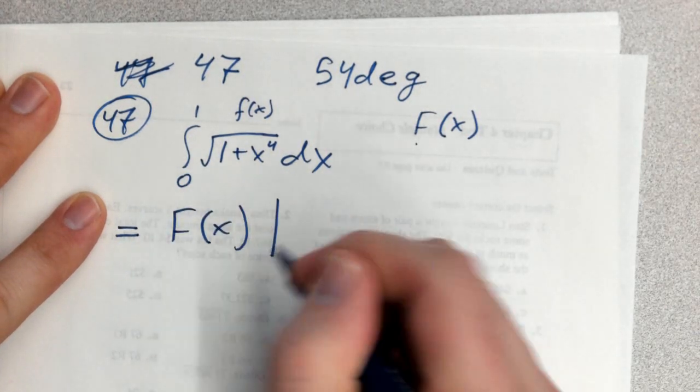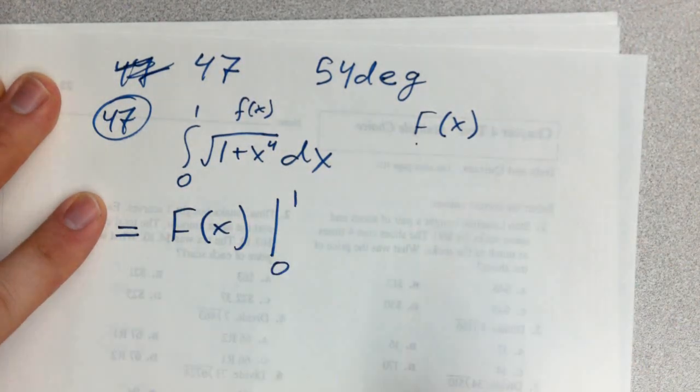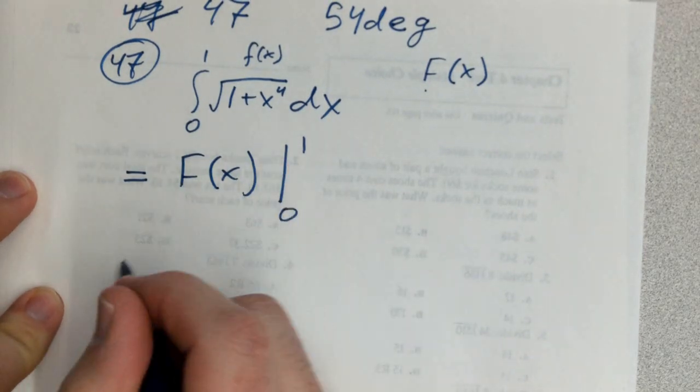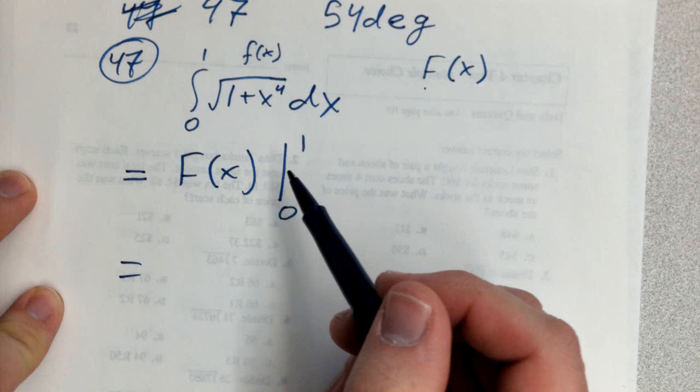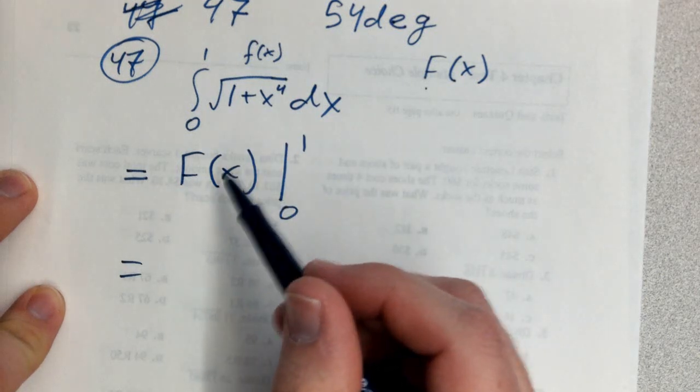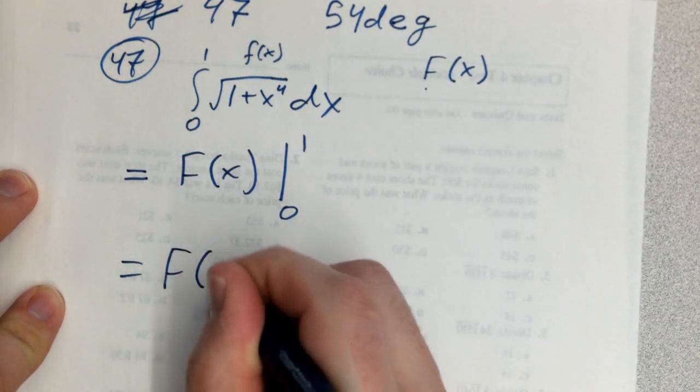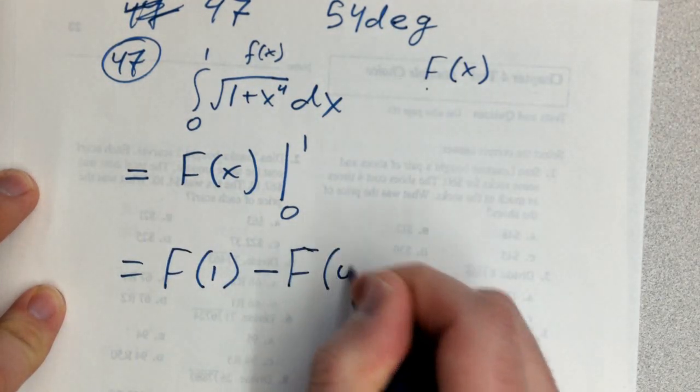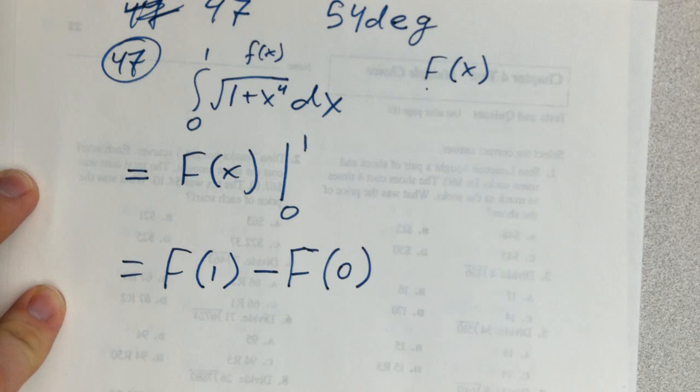And we're going to evaluate that anti-derivative from 0 to 1. So you're just going to take the approach that you would with any function or any anti-derivative. You're going to plug in the upper bound, subtract the lower bound, and that's it.